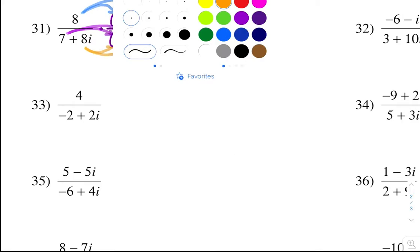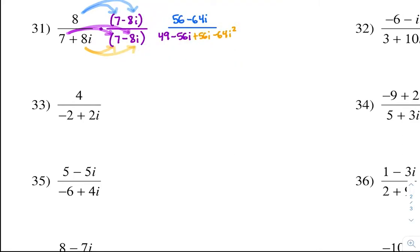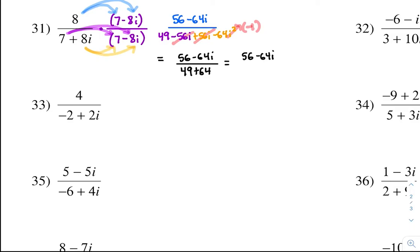Now there are things we can start to eliminate. Negative 56i and positive 56i cancel. Recall that i squared is negative 1. So what we really have is 56 minus 64i, all divided by — remember, it was negative 64i squared, so i squared became negative 1. What's negative 64 times negative 1? That's going to be positive 64. So 49 plus 64 is 113.